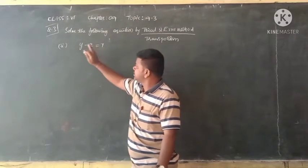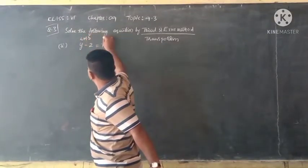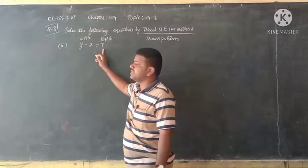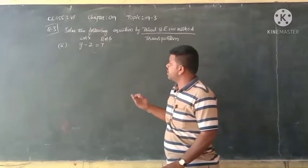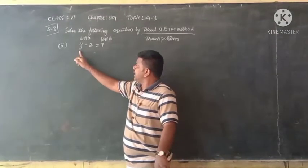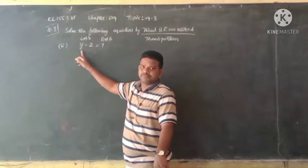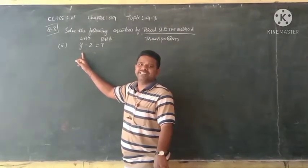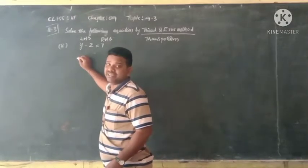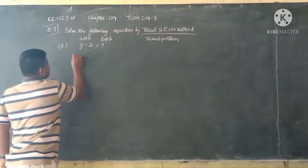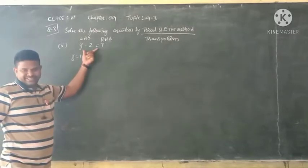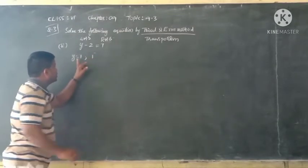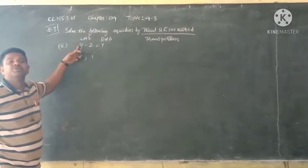In every equation there are two parts: LHS and RHS. We will show that LHS equals RHS by taking different values of y. First, let us take y equals 1. When y is equal to 1, we substitute this value in the place of y in the equation. This process is called substitution.